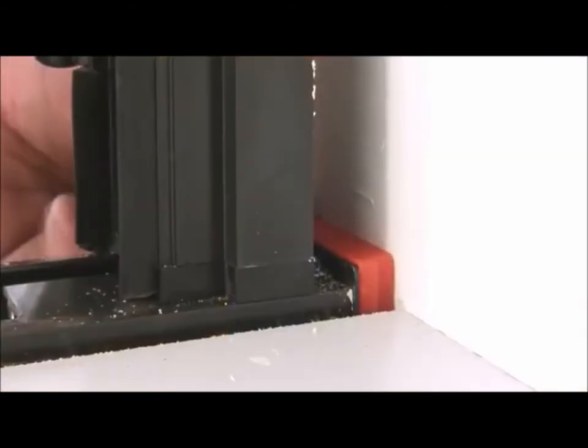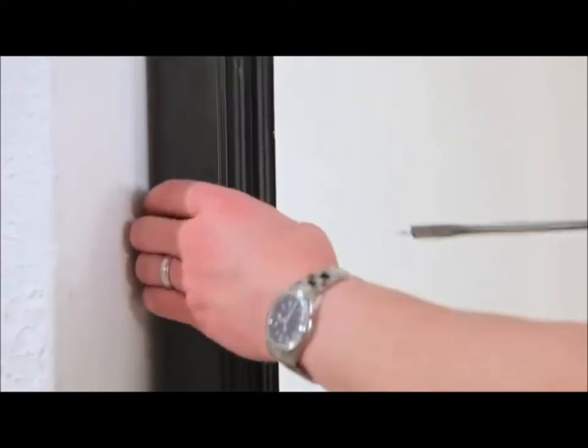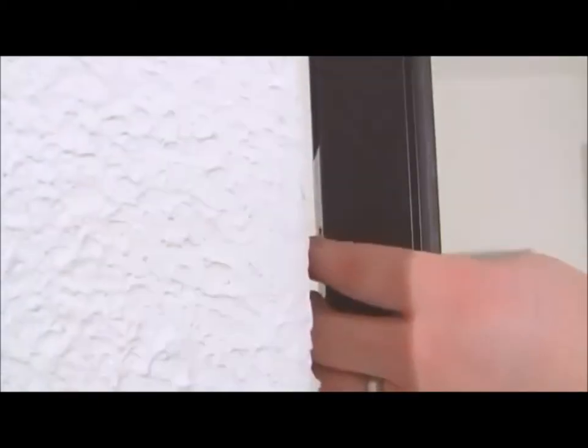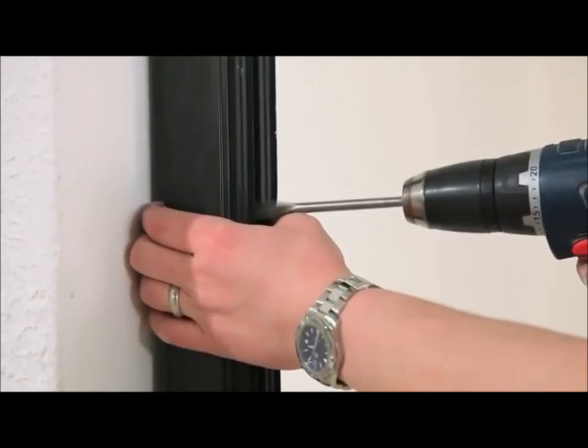Again, using frame packers, centralize the bottom track in the aperture. Using a 13mm drill bit, drill the first layer of polyamide level with the centre of each jam packer.